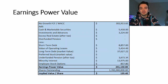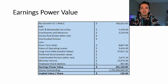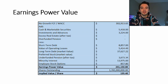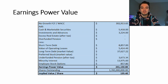You want to take these values from the net asset value model you've already calculated. I recommend doing an asset value model before the earnings power value model so you can compare the value of the company's assets to its earnings power. For Disney, the earnings power value is $241 billion, which divided by shares outstanding gives a final share price of $135 per share.